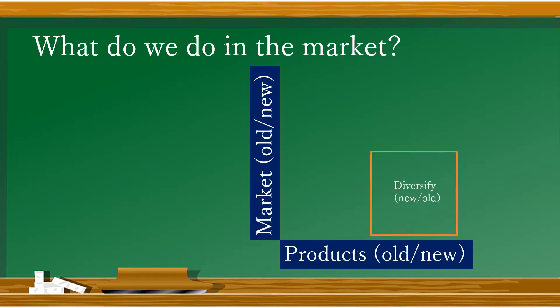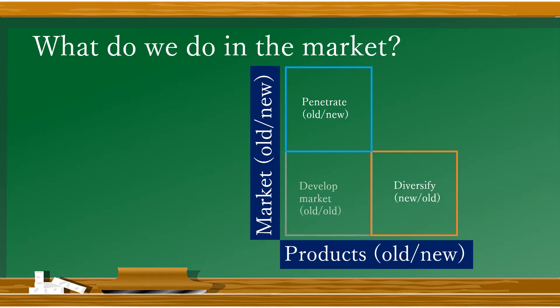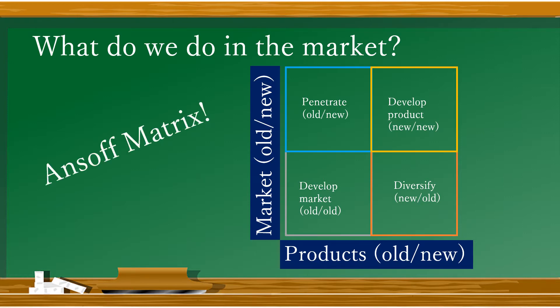The first will be to diversify ourselves from the competitors with our new products. Or maybe we could penetrate the new market with our old products. If we decide to change nothing, then it's up to us to develop the market so it keeps growing. But if we are doing everything new, then we should focus on developing our products. And we just created an Ansoff matrix.